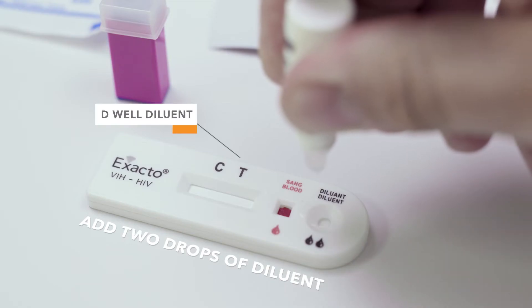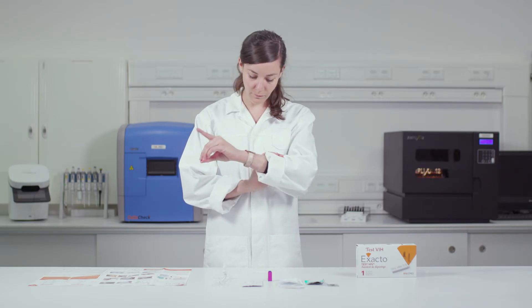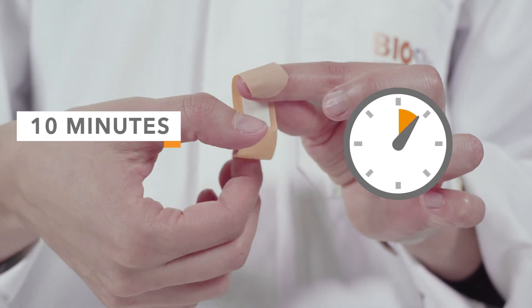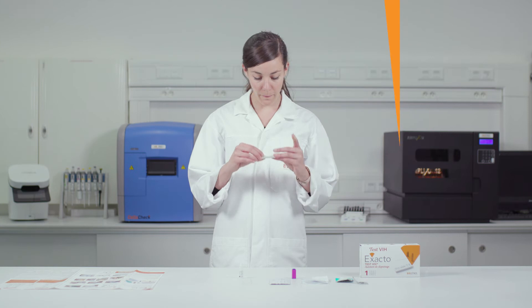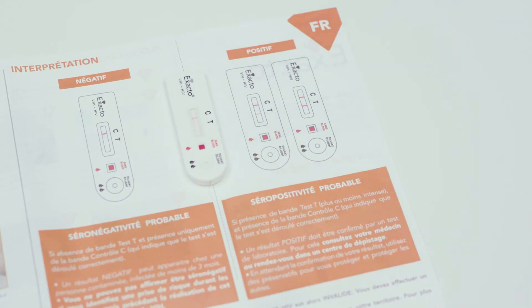Place two drops of diluent in the round well. Wait ten minutes for the results. During this time, apply the provided plaster on the area that was punctured. After the ten minutes are up, you can compare your results with the images provided in the instructions.